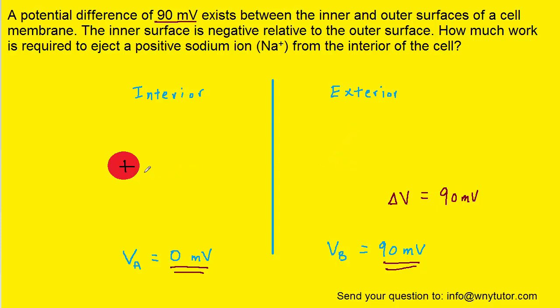So in order to accomplish the movement of the positive charge to the exterior of the cell, we must input some work. And that input work is simply equal to the charge multiplied by the potential difference.